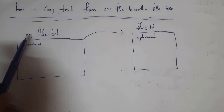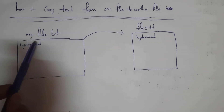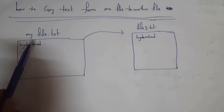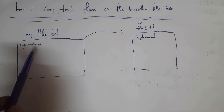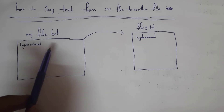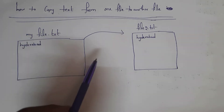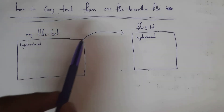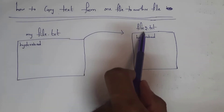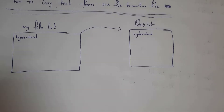For example, there is one file — let the file name be myfile.txt — and this file contains the text 'Hyderabad'. Now I want to copy this text to another file, that is file2.txt.